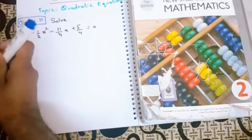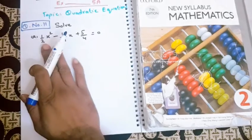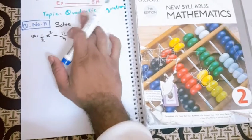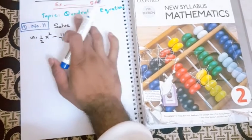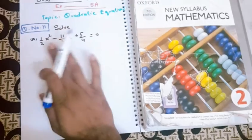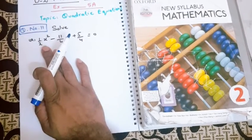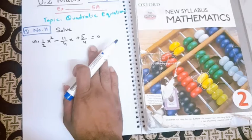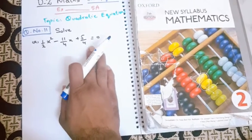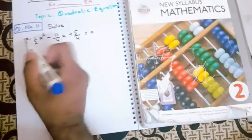First of all, since this question is from the topic quadratic equation, it is in the form of a quadratic equation. The first term is with x square, the second is with x, and the third one is a constant with no variable.